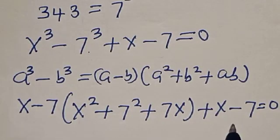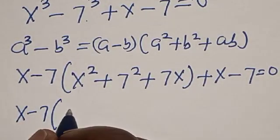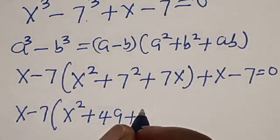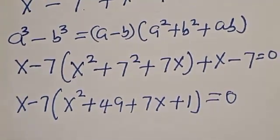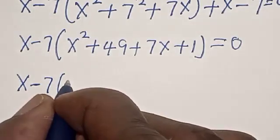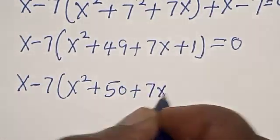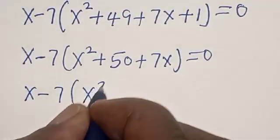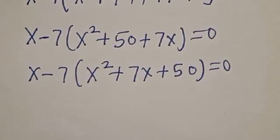Now s minus 7 is common in both terms, so we factor it out: s minus 7 times the quantity s squared plus 7s plus 49 plus 1 is equal to 0, which gives s minus 7 times s squared plus 7s plus 50 is equal to 0.